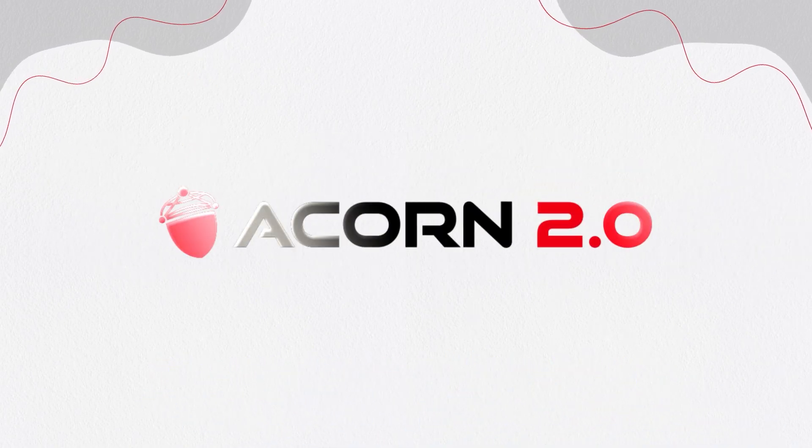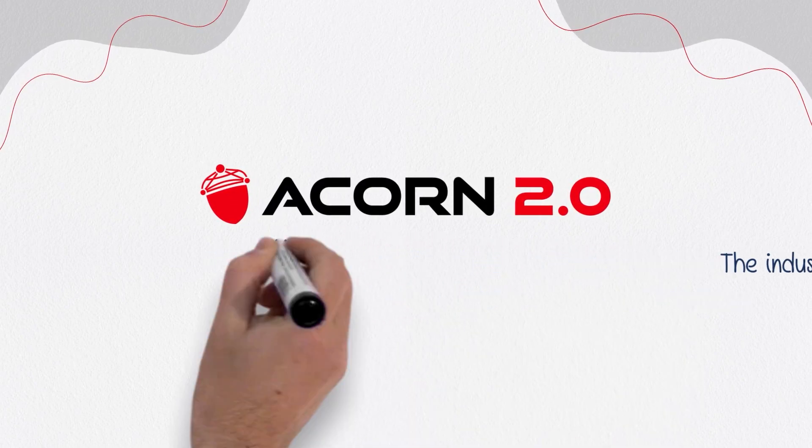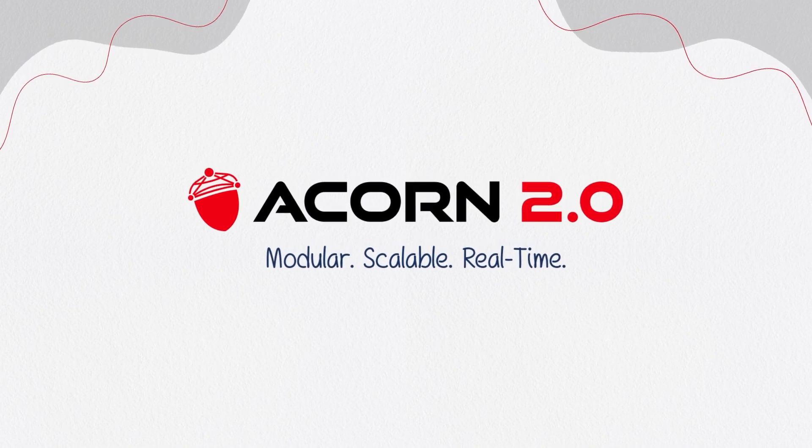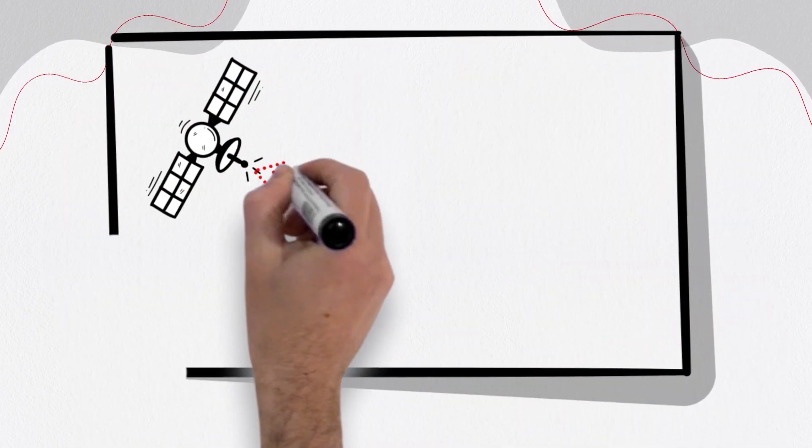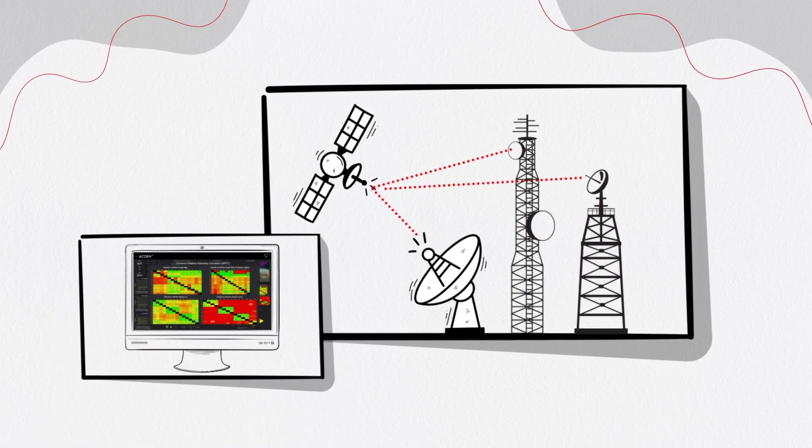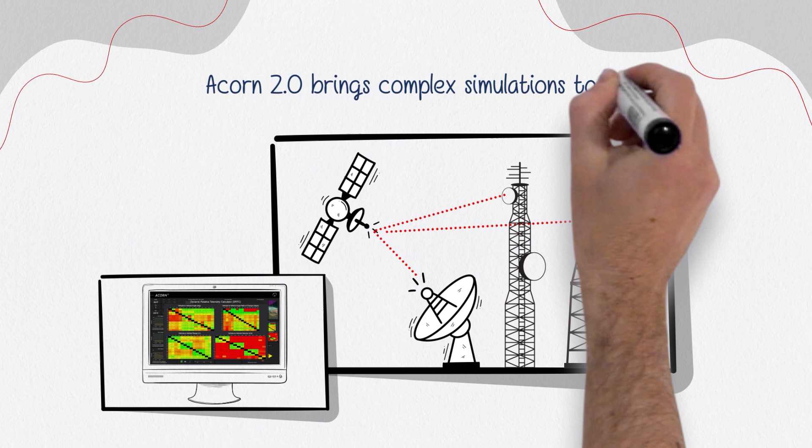Redwire's Acorn 2.0 is the industry's most flexible agent-based simulation environment. It's a modular, open-system architecture for real-time system modeling. Whether you're modeling individual parts of a single component, fully integrated systems, or networks of systems working together, Acorn 2.0 brings complex simulations to life.